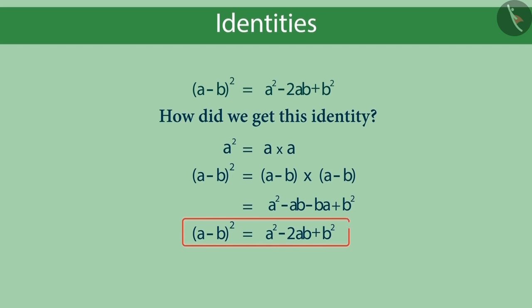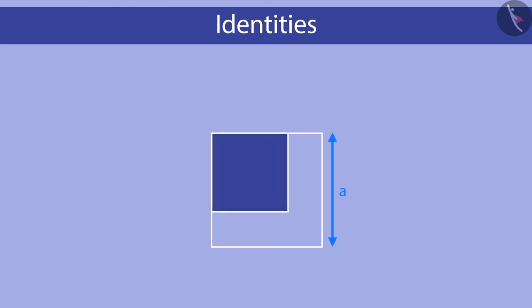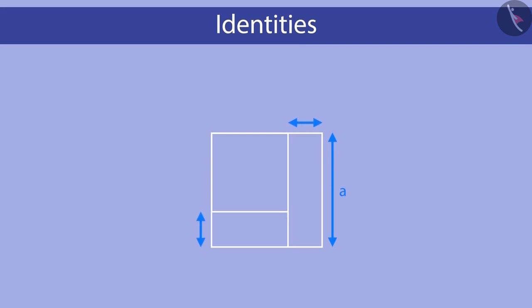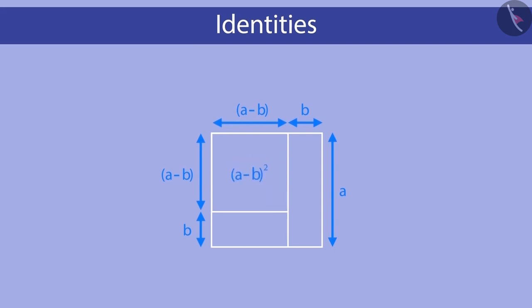To understand this identity better, let's look at this question. Suppose we have a square whose side is a. Let's divide this square into one smaller square and two rectangles. Suppose these two lengths are equal and we denote it by b. The side of the smaller square will be a minus b, so its area will be equal to a minus b raised to the power of 2.